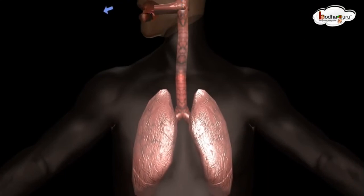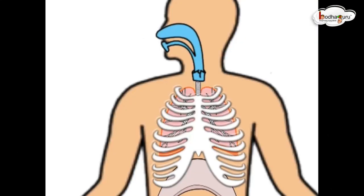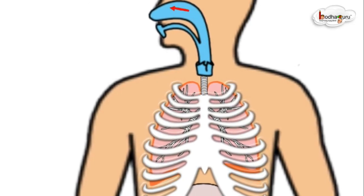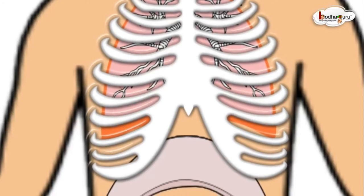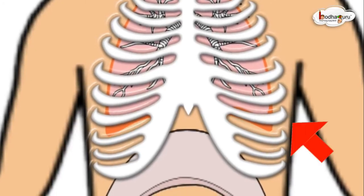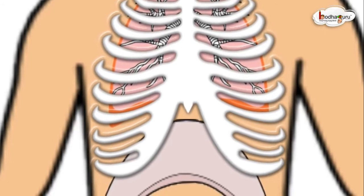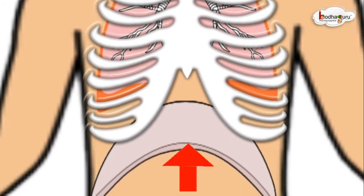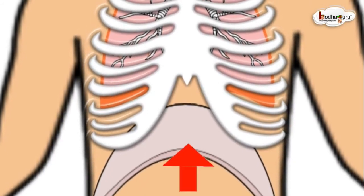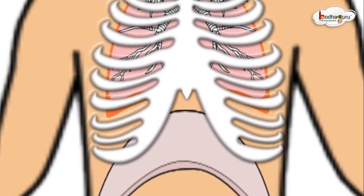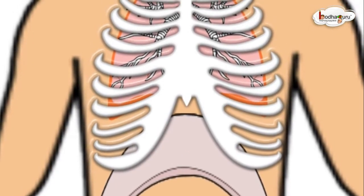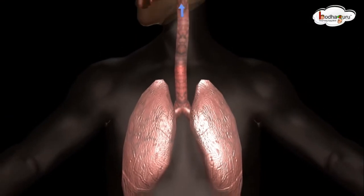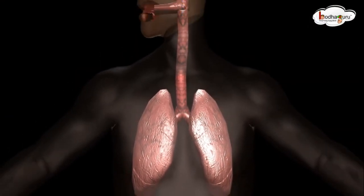Similarly, giving out of air rich in carbon dioxide is known as exhalation. During exhalation, the ribs move downwards and inwards. The diaphragm moves up. The chest cavity is reduced and the air rushes out of the lungs, making the lungs smaller.